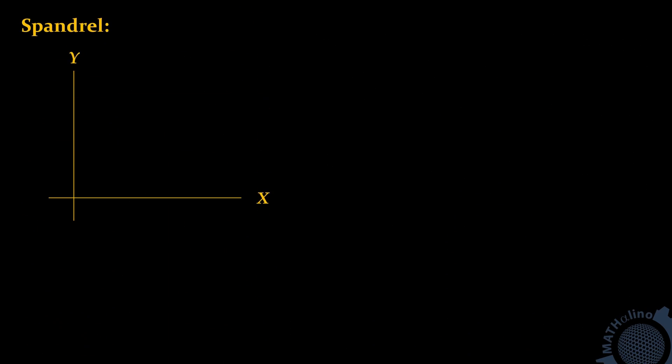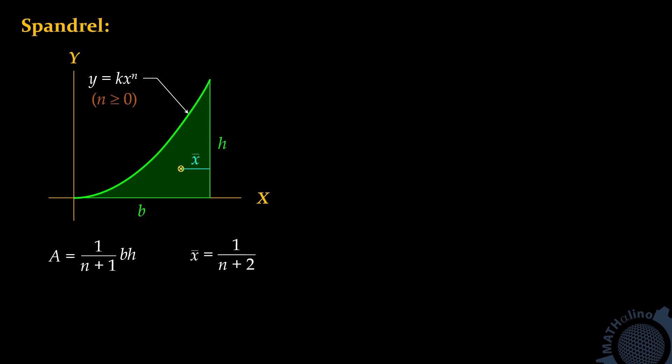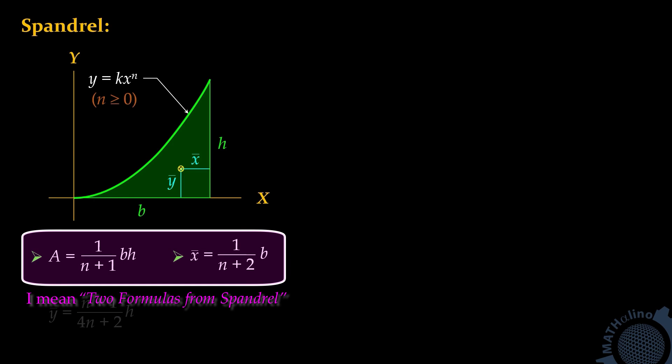The area moment method involves the moment diagram. Fortunately, we are not going to draw the actual moment diagram; instead, we will draw the moment diagram by parts. In most cases, the moment diagram by parts are spandrels — graphs of the function y equals k times x raised to n, where n is an integer greater than or equal to 0. The area of the spandrel is equal to 1 over (n+1) times b times h, and the centroid x-bar equals 1 over (n+2) times b. In doing the area moment method, we only need the area and the x-bar.